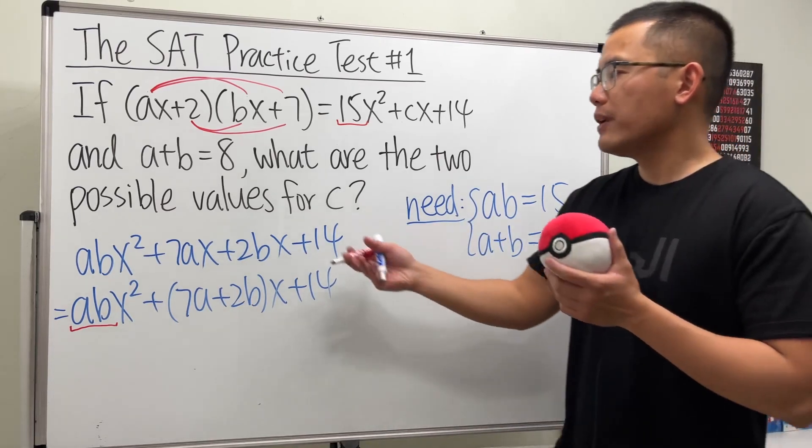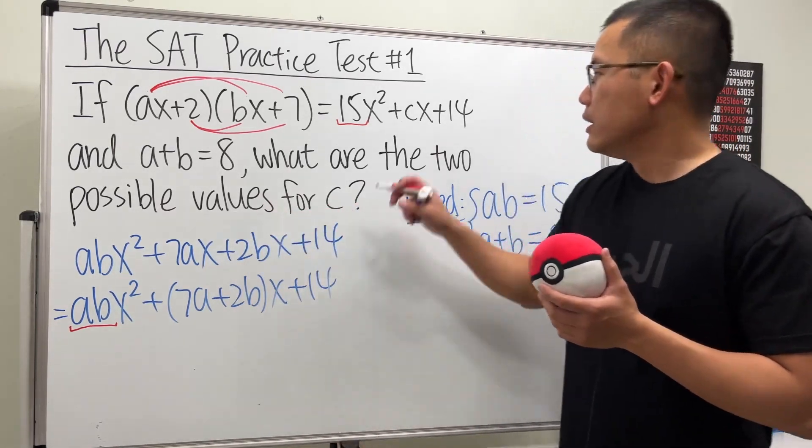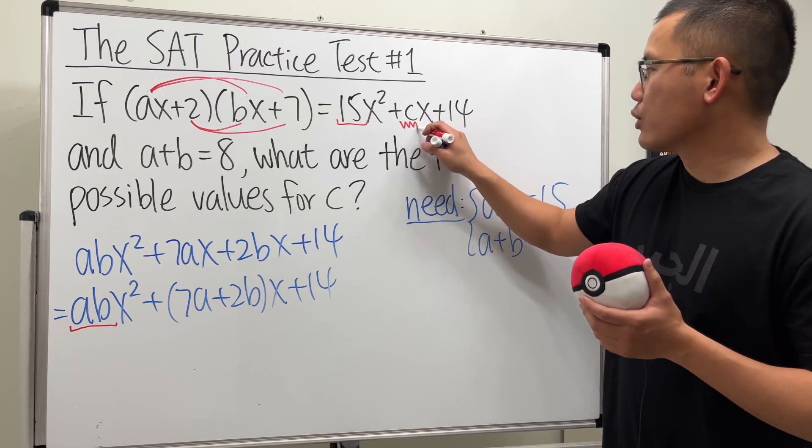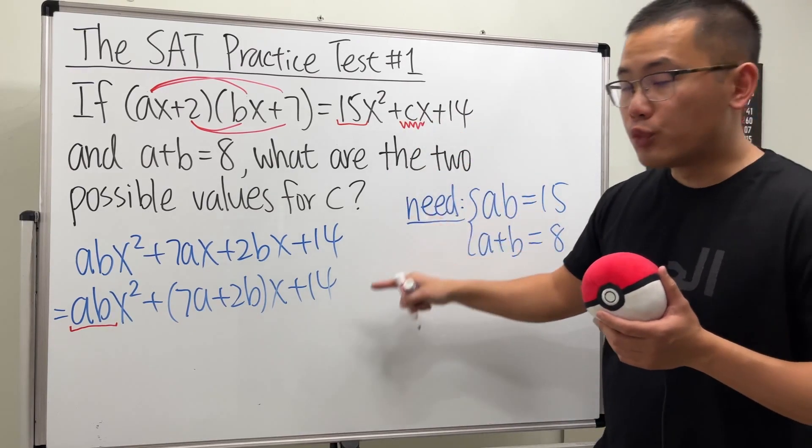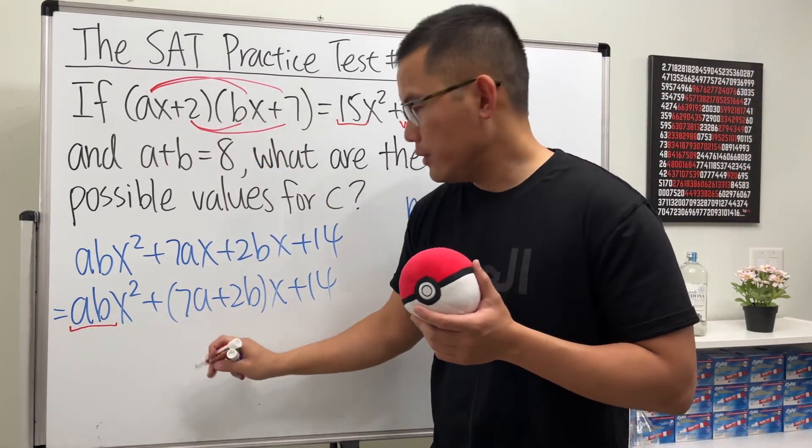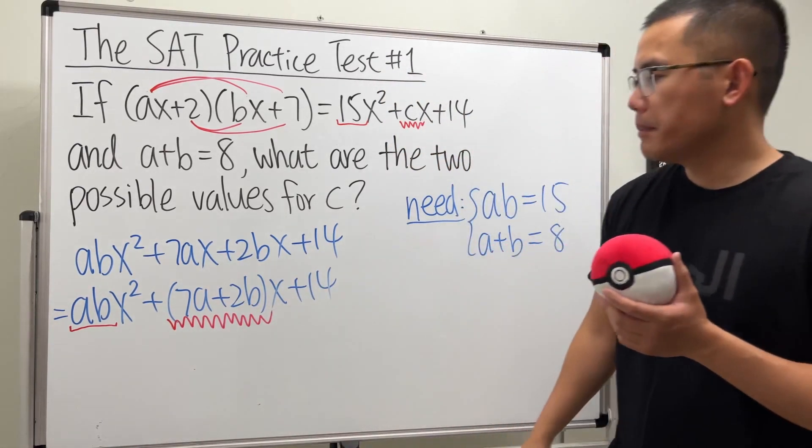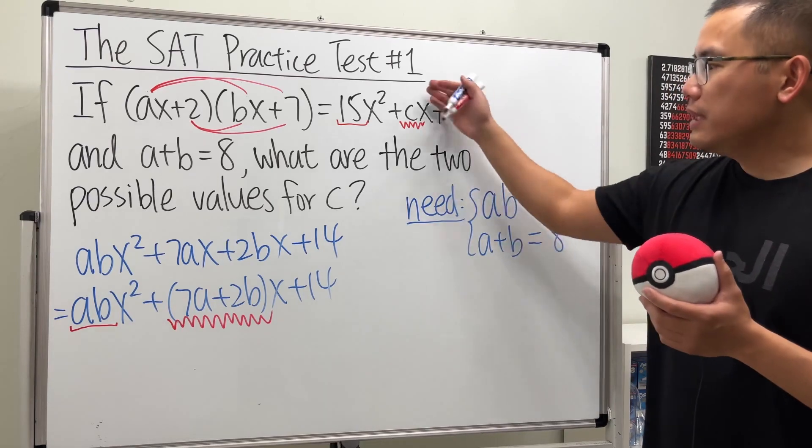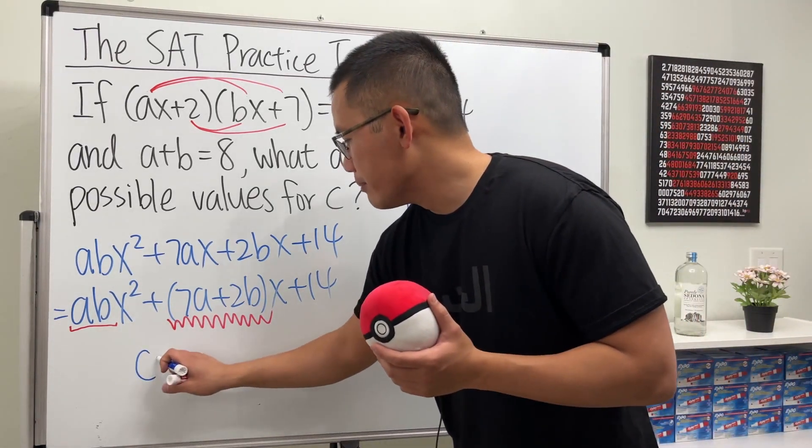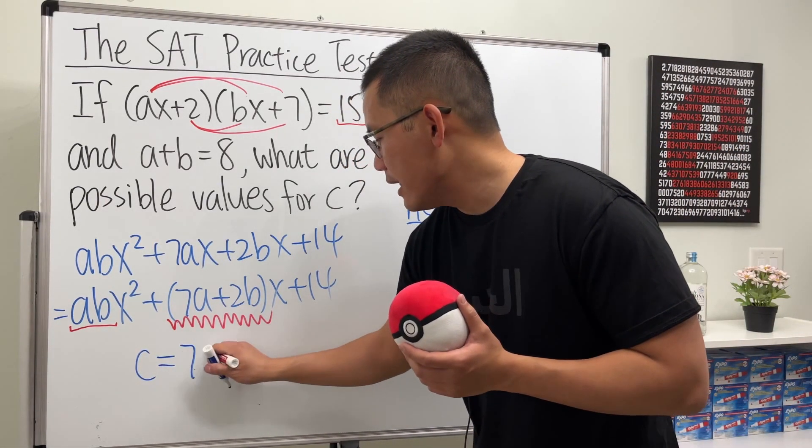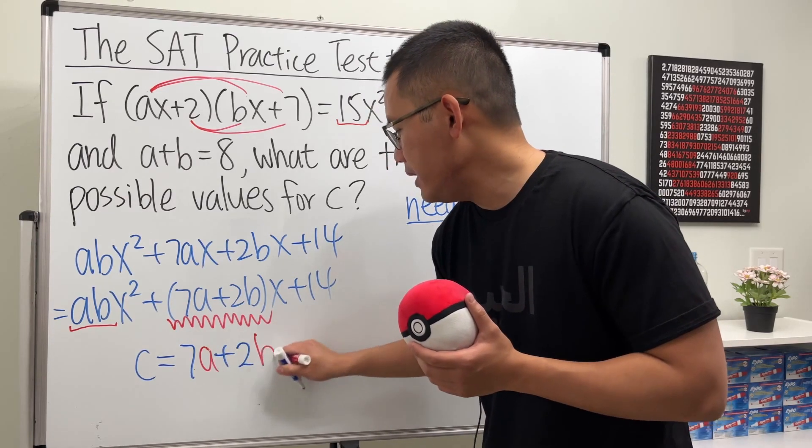And remember, the question is asking us to find out what's the value for c. c is right here. And that's the coefficient of x. And right here, the coefficient for x is 7a + 2b. So this and that tells us c must be equal to 7a + 2b.